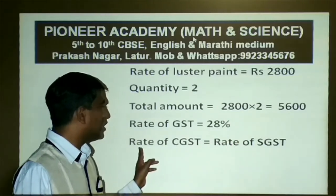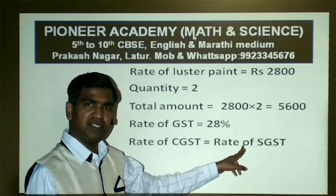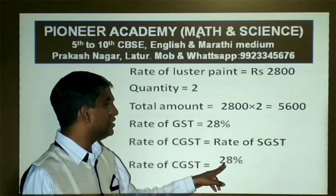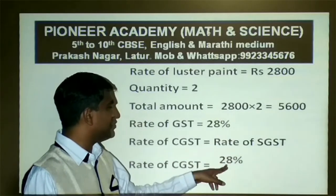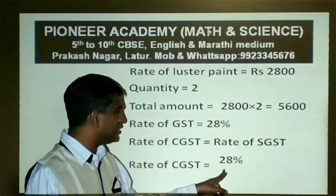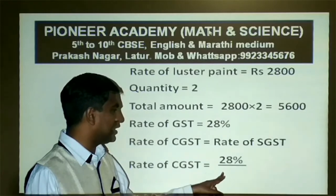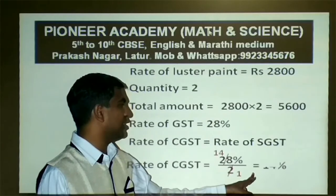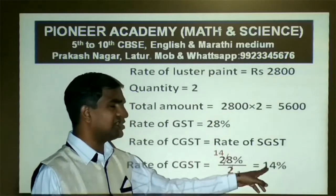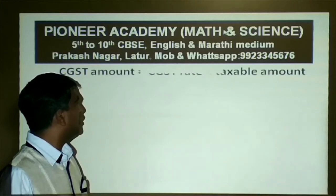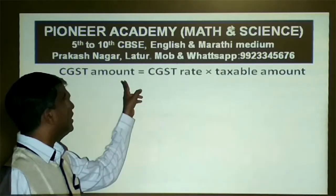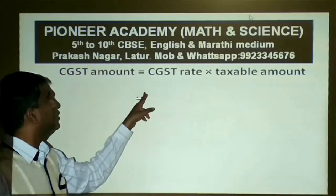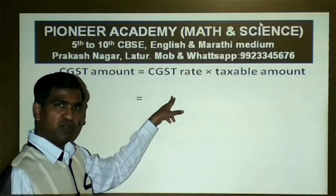The rate of CGST and the rate of SGST are each equal to 14%, since CGST rate equals SGST rate equals 28% divided by 2, which is 14%.